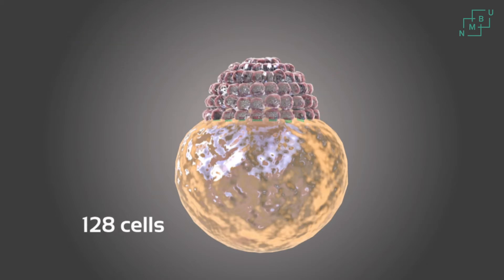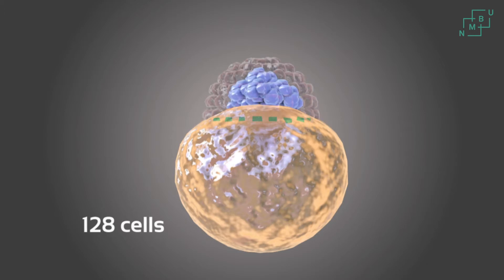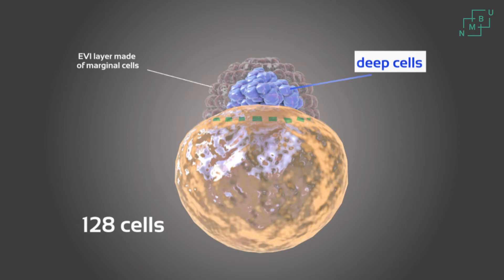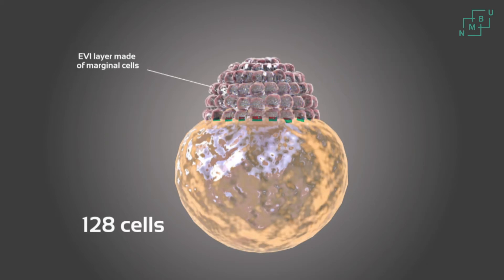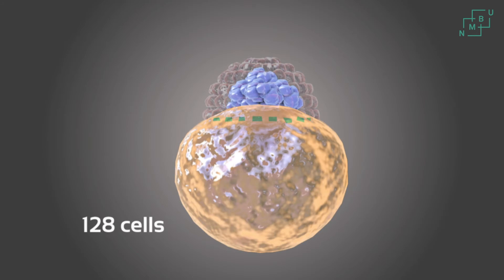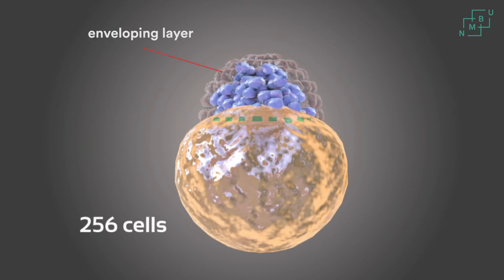The blastular period begins at the 128-cell stage. A high mound of blastomeres appears to be a solid half-ball perched on the yolk cell. The cleavage furrows are now irregular and it is difficult to follow the individual divisions, which are asynchronous. At the 256-cell stage, there is a thin outer layer of enveloping cells and many more deep cells.